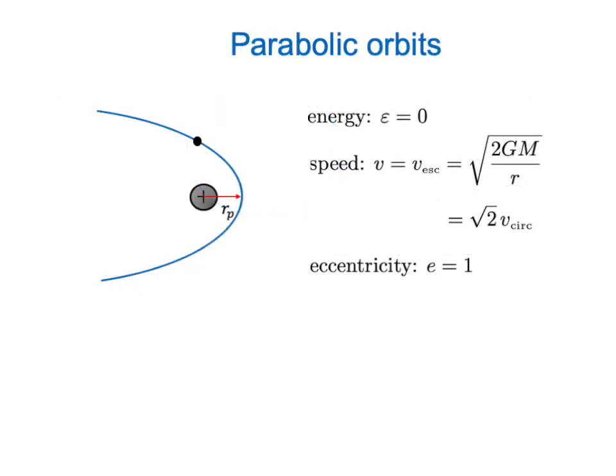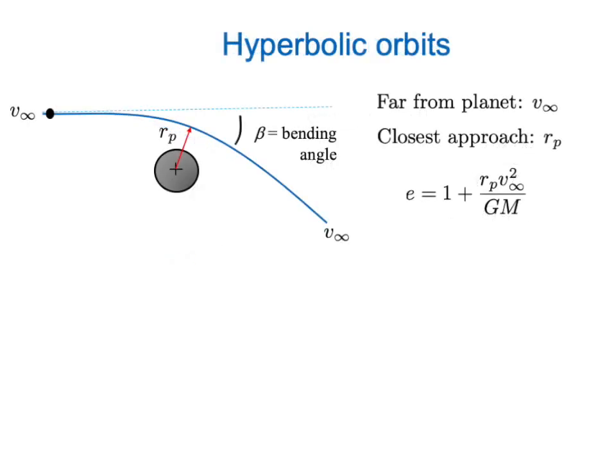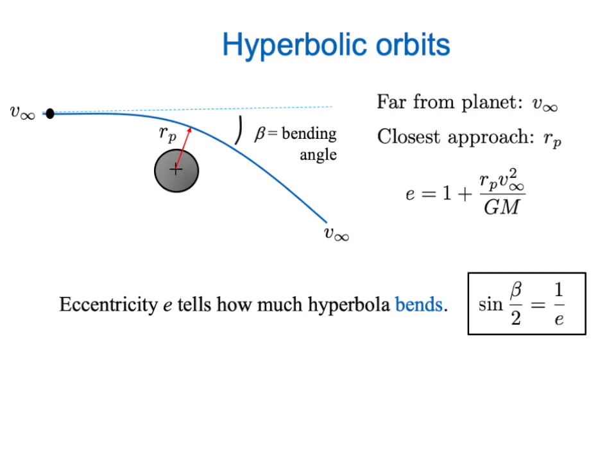We also have parabolic orbits, which have total energy zero, where your speed at any point is exactly the escape speed at that distance — the escape speed being the square root of two times the circular orbit speed — and the eccentricity equals one. Hyperbolic orbits have positive total energy, so far from the planet you have some leftover asymptotic speed, v-infinity. The eccentricity is related to one plus r_p times v-infinity squared over GM, and it tells us the bending angle of the hyperbolic orbit: the sine of half the bending angle equals one over the eccentricity.